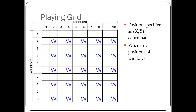The playing grid is a two-dimensional 10x10 grid and any player's position is indicated by the XY coordinate. X runs from 1 to 10 across the top and Y runs from 1 to 10 down the side — X goes up left to right, Y goes up top to bottom. The W's coordinates represent the positions of the windows, and they've been placed specifically where both X and Y coordinates are always even numbers — for example, 8-2, 4-4, 2-6, 10-2.